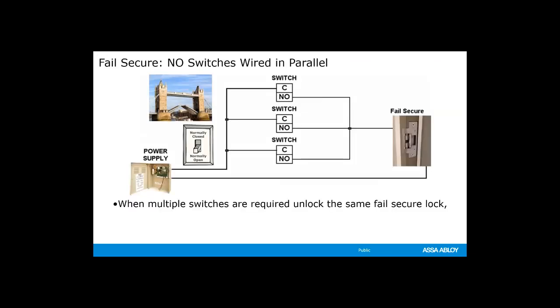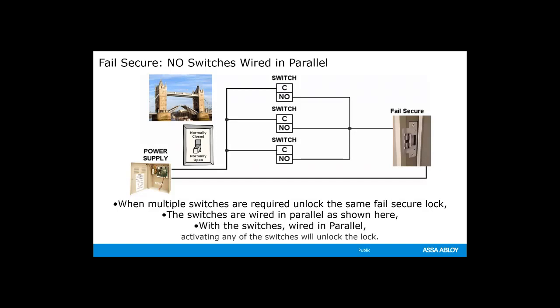When multiple switches are required to unlock the same fail-secure lock, the normally open switches are going to be wired in parallel. The switches are wired in parallel so activating any of the switches will unlock the door. If we hit the bottom switch, the current will be completed through the bottom switch. If we hit the middle switch, the current is completed through the middle switch, and if we hit the top switch, the current will be completed through the top switch, unlocking the door.